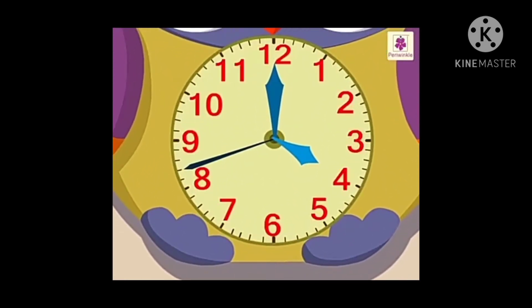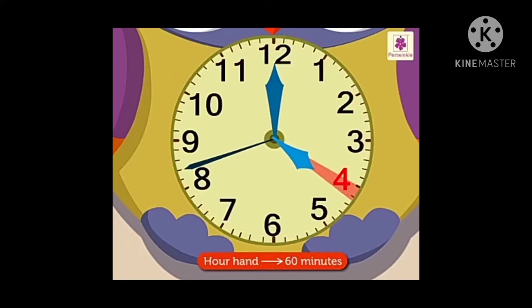Each number tells us the time in hours. The hour hand moves from one number to another in 60 minutes. It completes one rotation in 12 hours. Therefore, in a day it rotates twice.